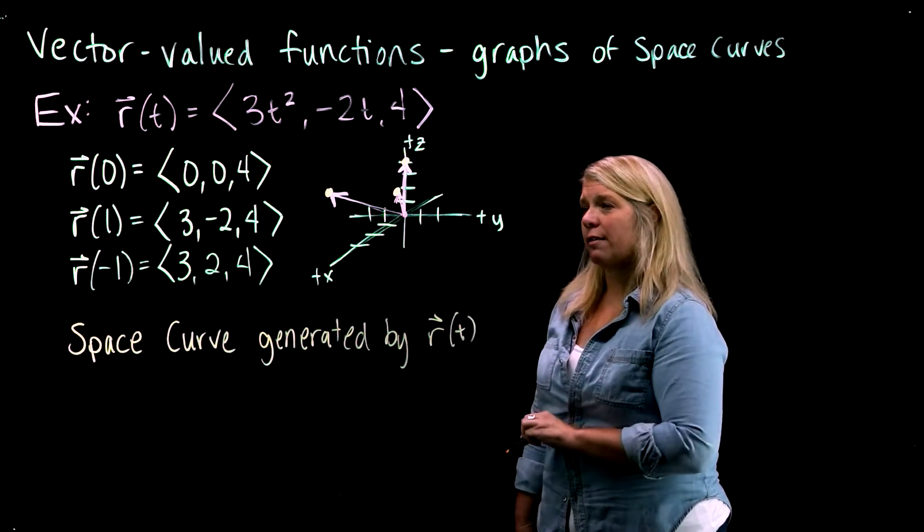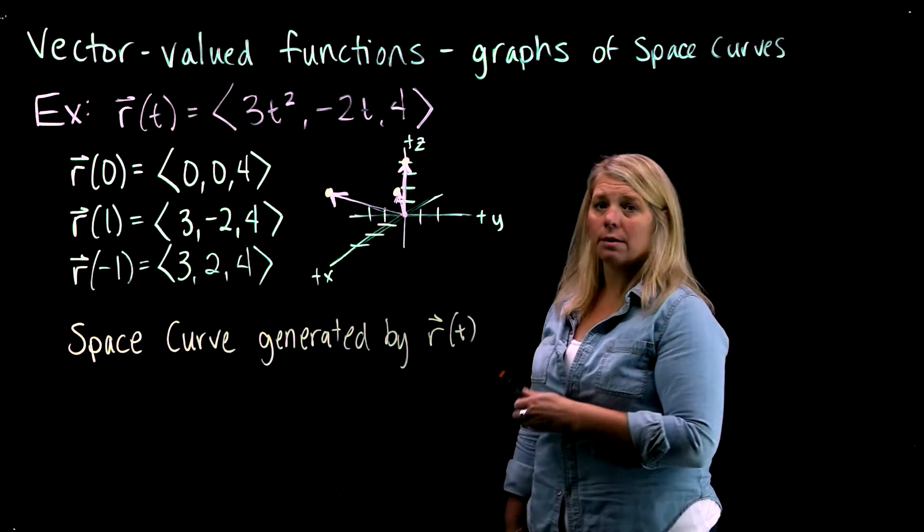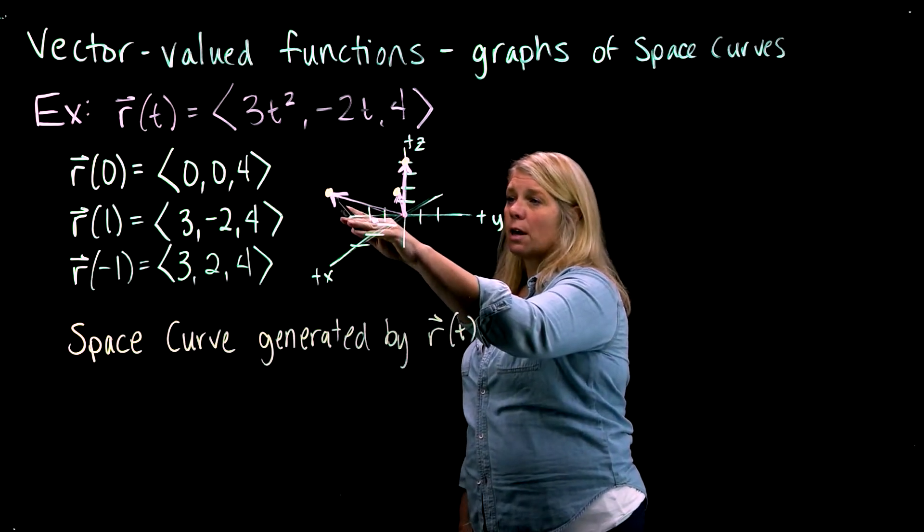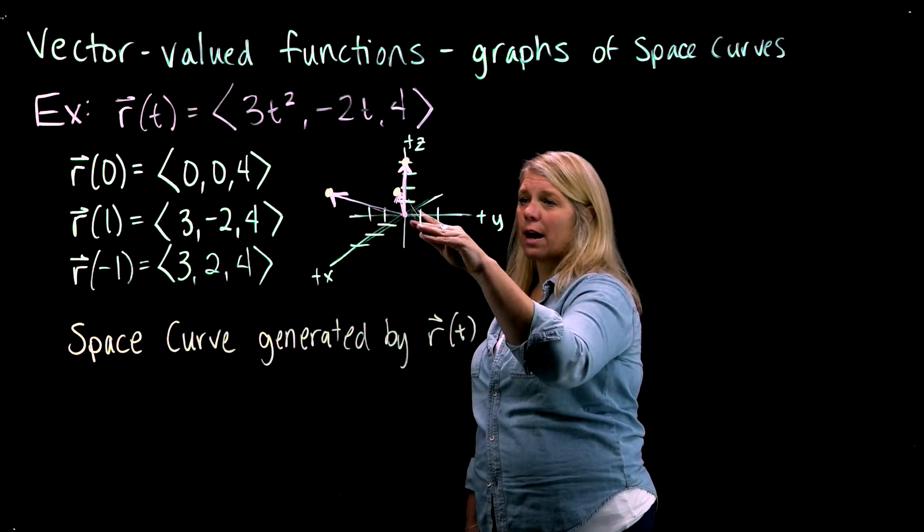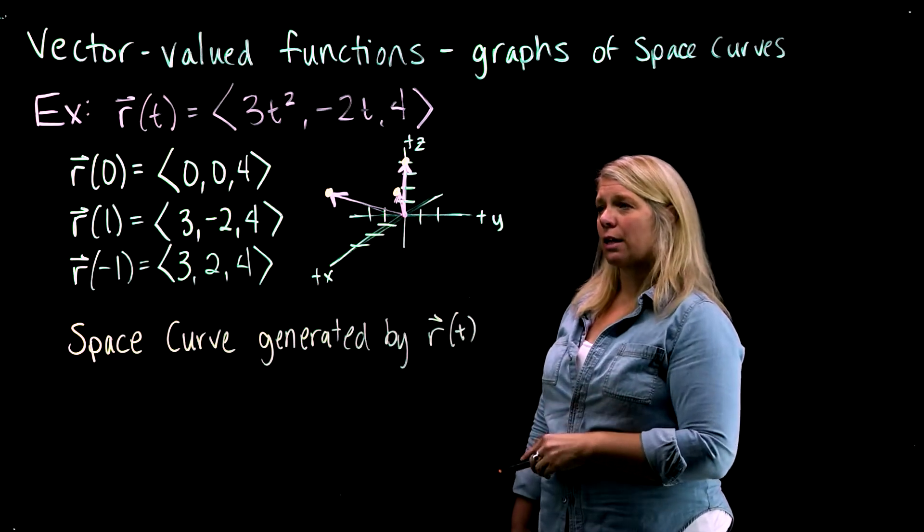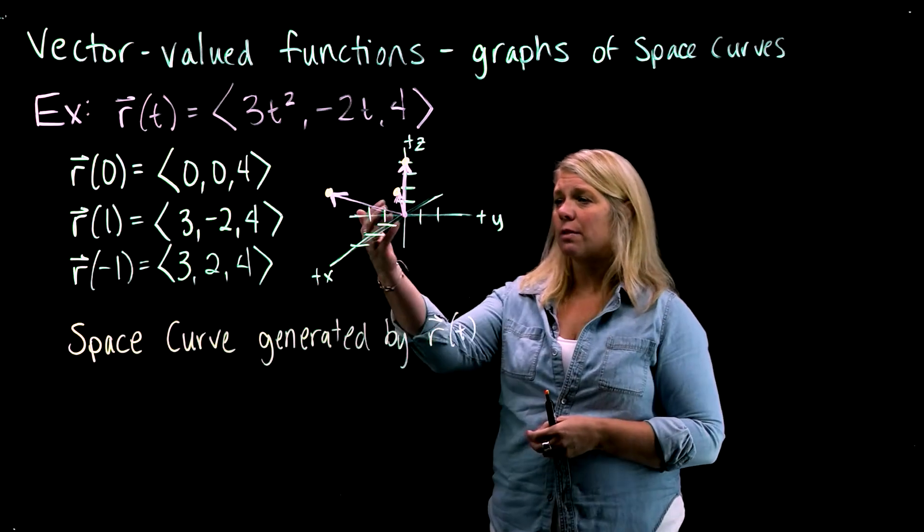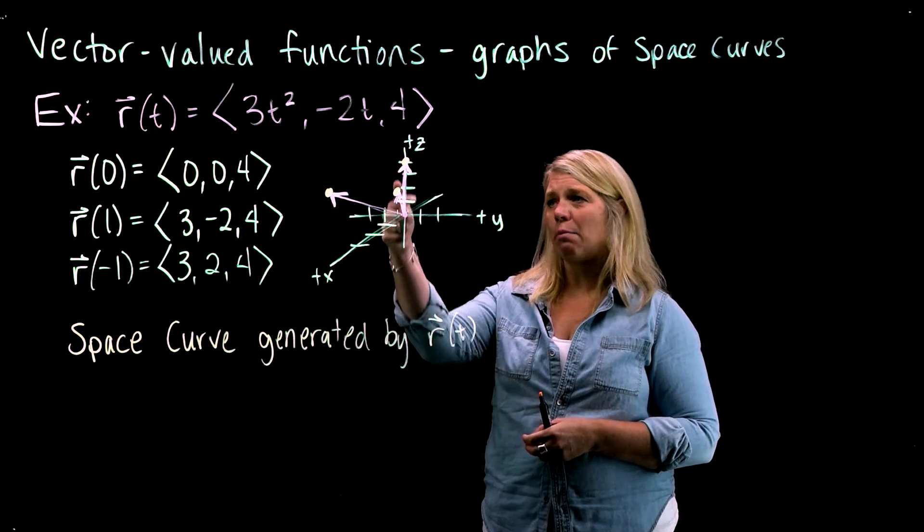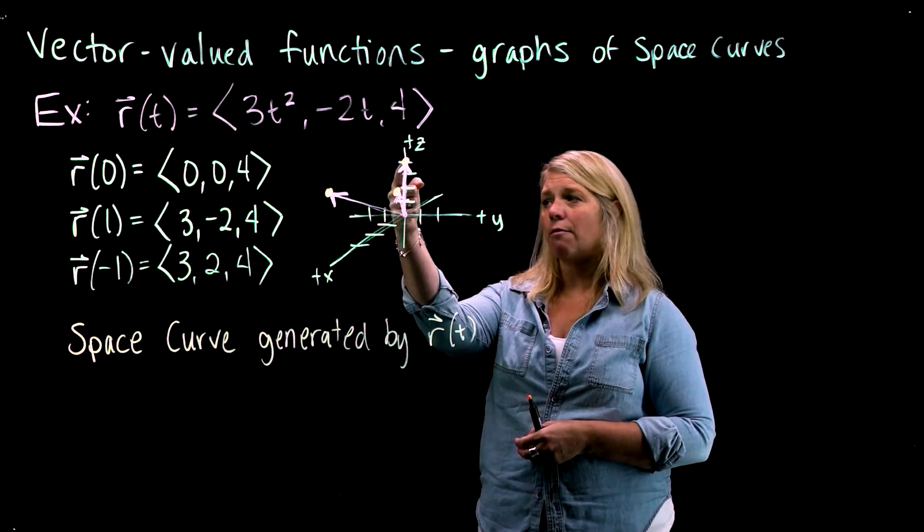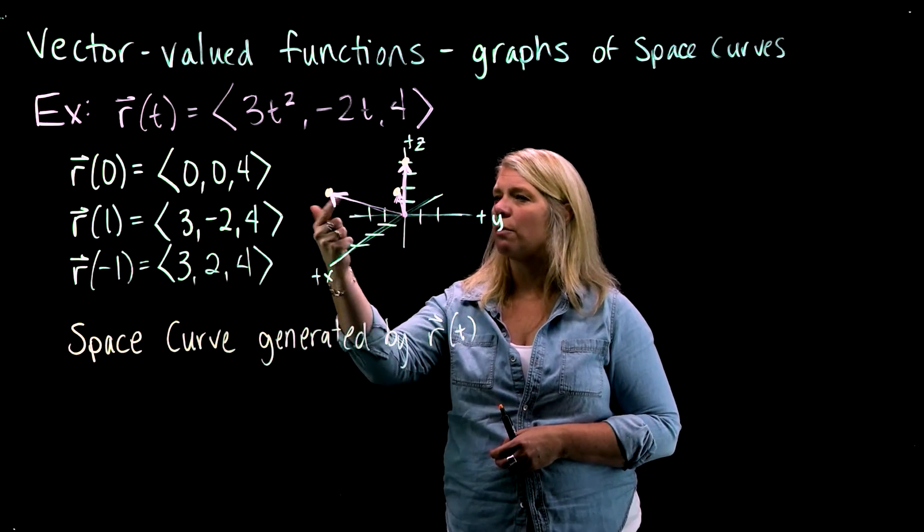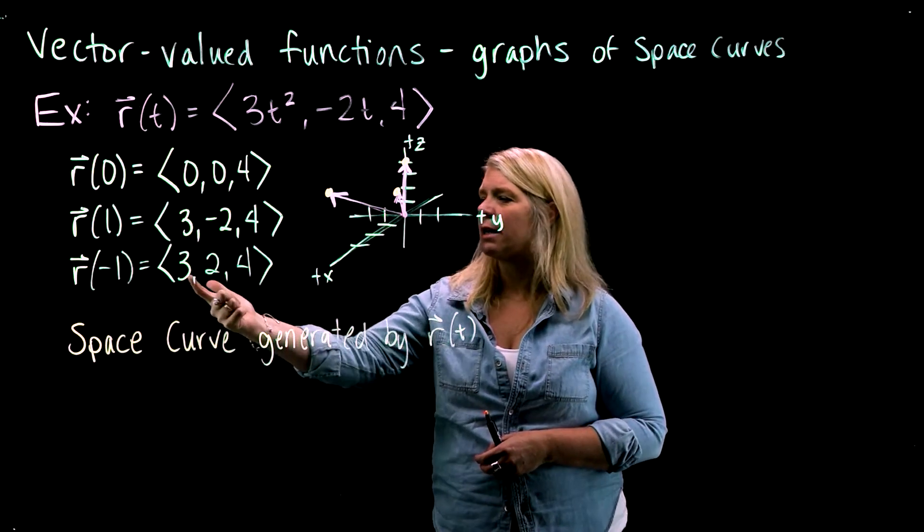And so what that space curve is, is really just a set of points, so ordered triples. Those ordered triples that are at the terminal points of those vectors all drawn with their tail at the origin. And if you remember when I plotted these vectors, really what I did was I started at the origin, and then I plotted the point 0, 0, 4, and the terminal point here would be 3, negative 2, 4, and the terminal point here is 3, 2, 4.